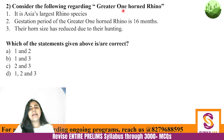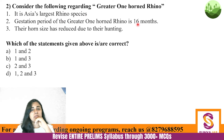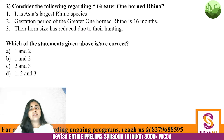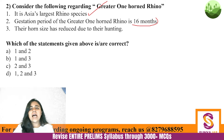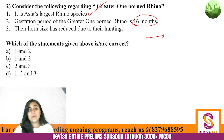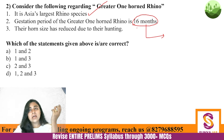Next question: consider the following regarding Greater One-Horned Rhino — it is Asia's largest rhino species; gestation period is 16 months; and horn size has reduced due to hunting. Which statements are correct? First statement is absolutely correct — it is actually the world's largest rhino species. Second: gestation period is the time a mother keeps the baby in her body before giving birth — 16 months is correct. Also, tell me in the comments which mammal has the longest gestation period.